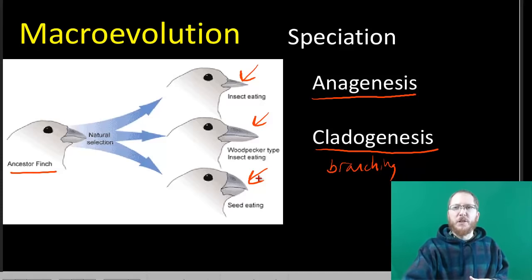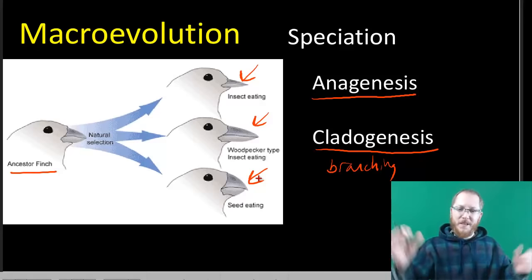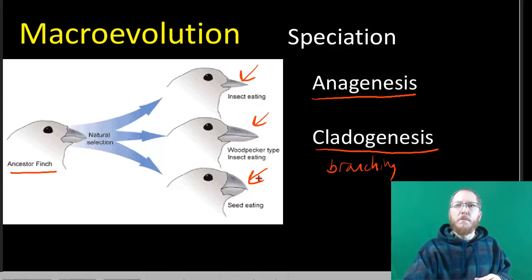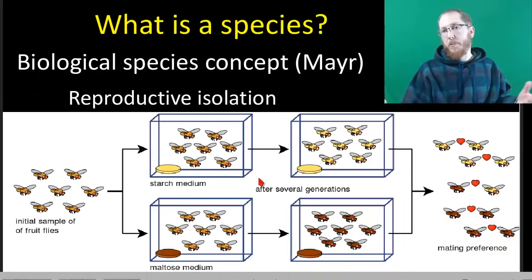Adaptive radiations are also popular after mass extinctions, because suddenly there's a lot of things available — some of these things were vacated permanently, and so you can move in because the old guy's gone. Dinosaurs disappear, mammals got a shot.